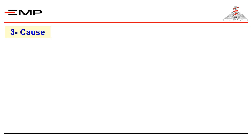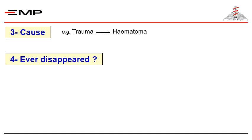It is important to ask the patient about the cause of the swelling. The patient can sometimes relate the swelling to a specific cause; this may not always be relevant, but you should ask and record what the patient says. A classical example is hematoma related to trauma. Also ask the patient if the swelling has ever disappeared — classically, reducible hernias appear on coughing and disappear on lying down.